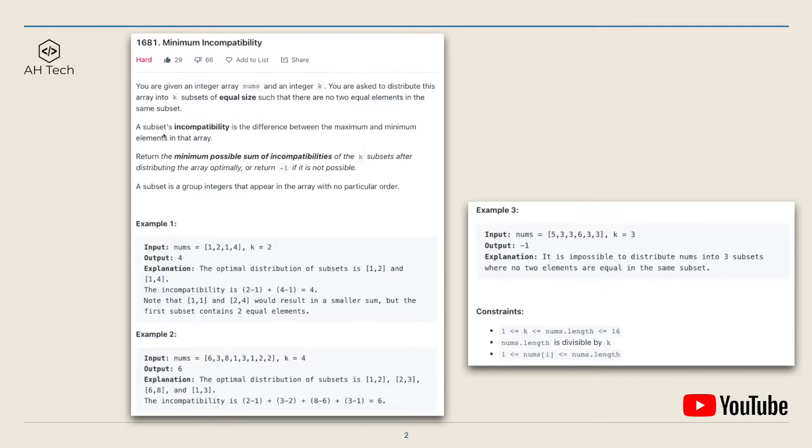Here we define a subset's incompatibility as the difference between the maximum and minimum elements in that array. We have to return the minimum possible sum of incompatibilities of the k subsets after distributing the array optimally, or return negative 1 if it is not possible.